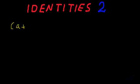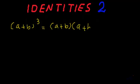Today we will derive the identity for (a + b) whole cube. As we know, this can be written as (a + b) multiplied by (a + b) whole square.